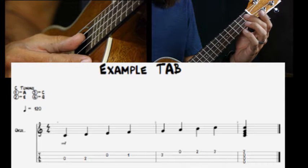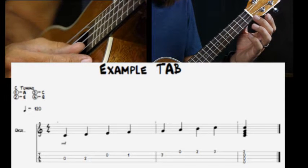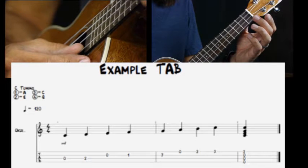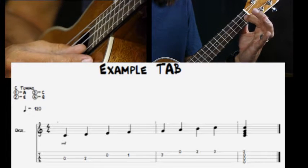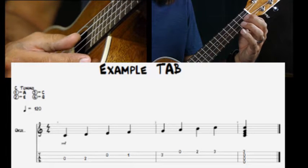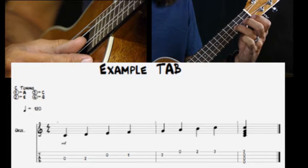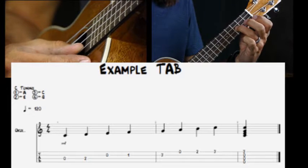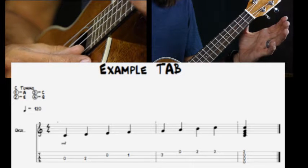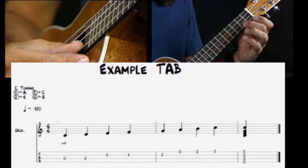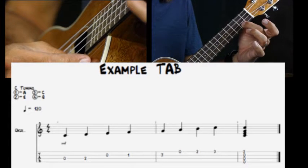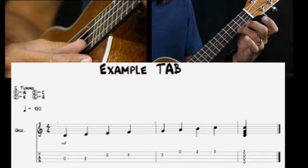Then we have a zero on the next line on our E string. Then you have a one, so that's the first fret on the E string. Then we have a three, so that's the third fret on the E string. Then we have a zero on the A string, so that's an open string. Then we have a two, second fret, A string, and a three.